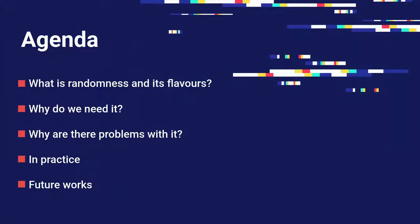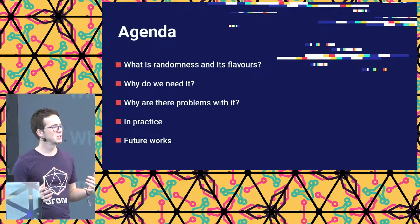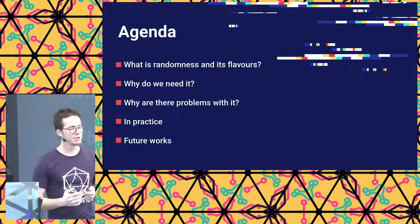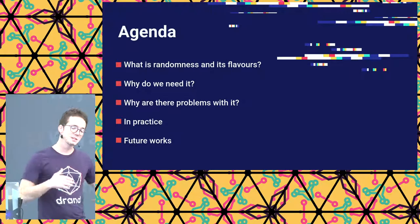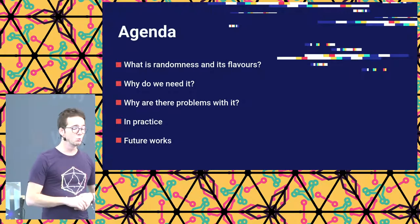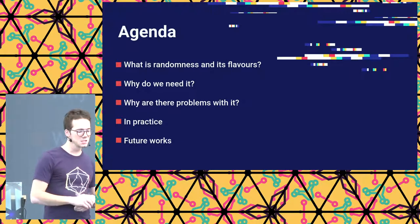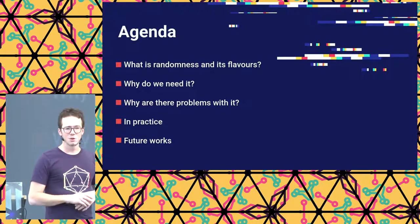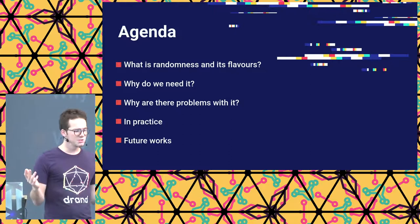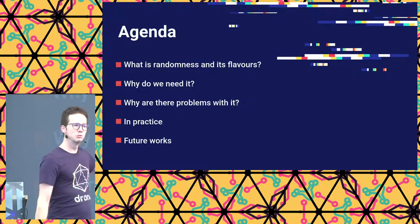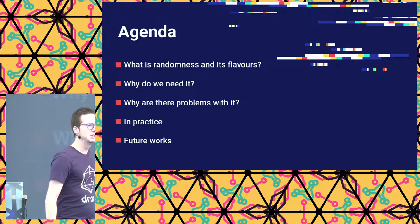So, what are we going to see? We're going to see what randomness is, and then we'll look at the different flavors of randomness. Next, we'll see why we need randomness, what kinds of problems there are with randomness, and how to do it properly in practice.